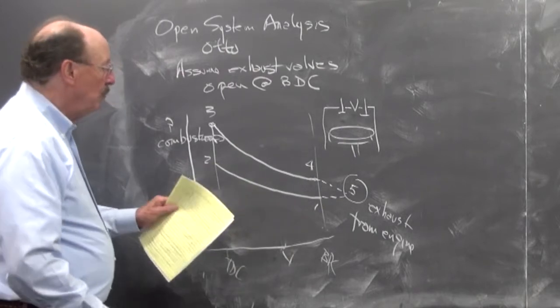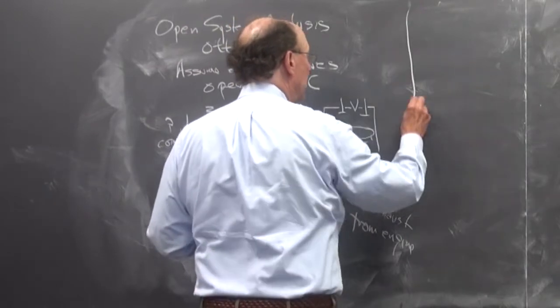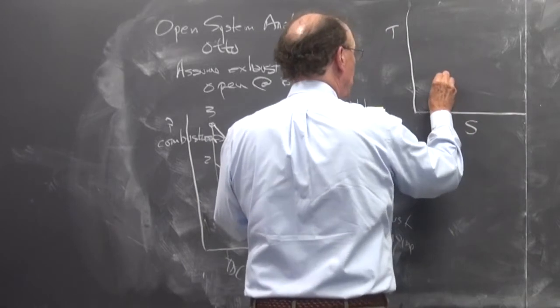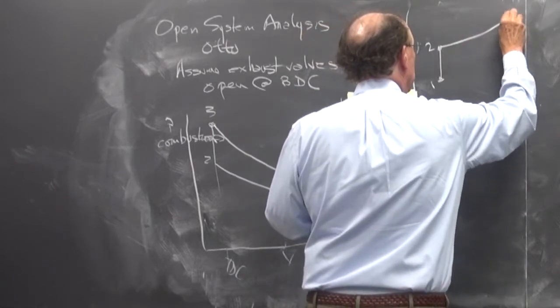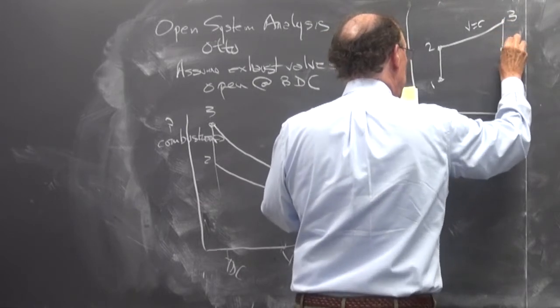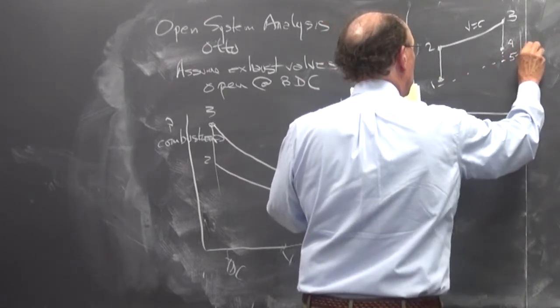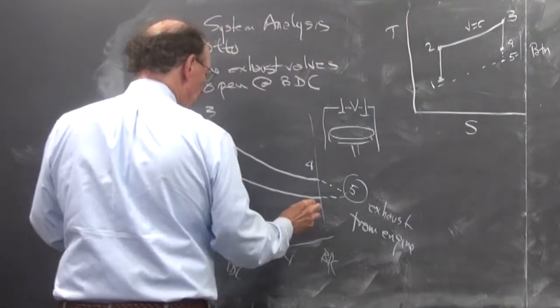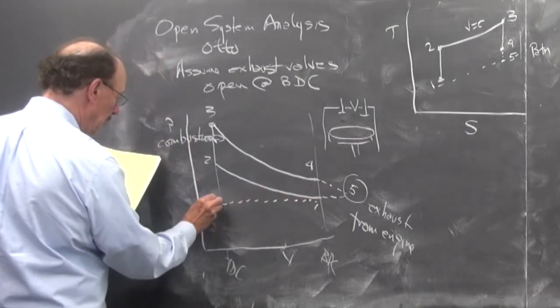And if we were to look at this on a TS diagram, we go from 1 to 2, isentropic combustion, constant volume. We expand from 3 to 4, and then we have 4 to 5, and this is our atmosphere. And here, what we have is we go over to 6.